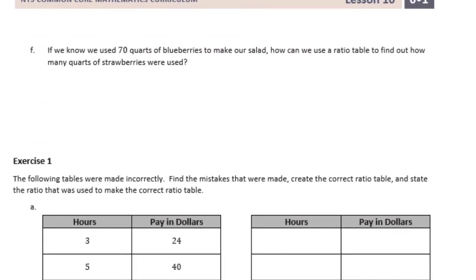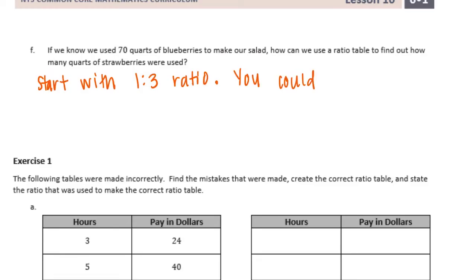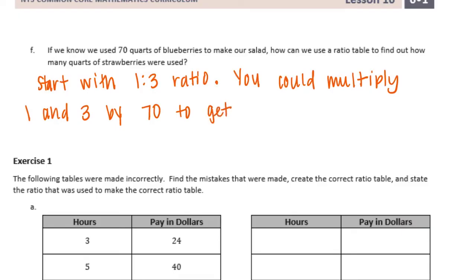Part F: If we know we used 70 quarts of blueberries, how can we use a ratio table to find how many quarts of strawberries were used? There are multiple ways to do this. Maybe you start with the 1 to 3 ratio and multiply both by 70 to get your new ratio. Or you could multiply by 10 first to get to 10 and 30, and then multiply by 7 to get to 70 and 210.